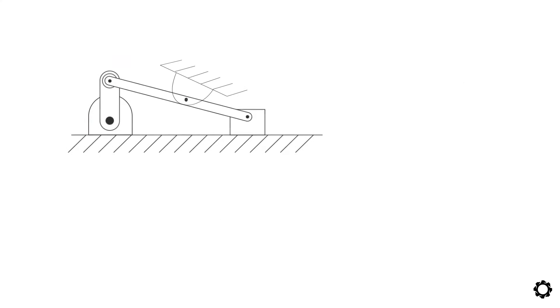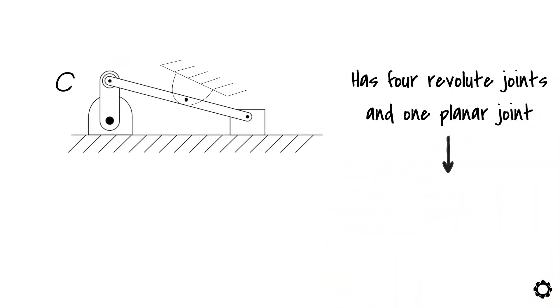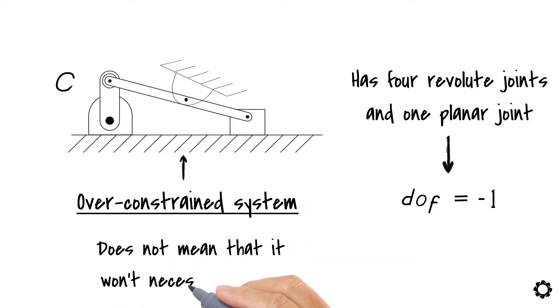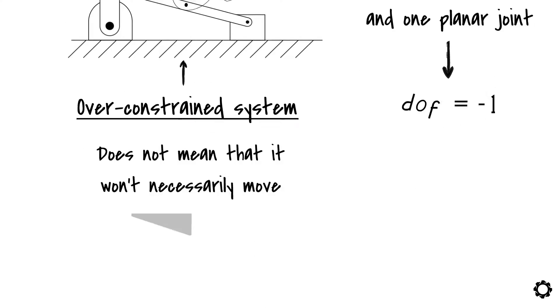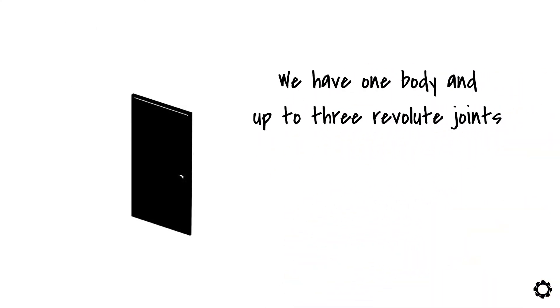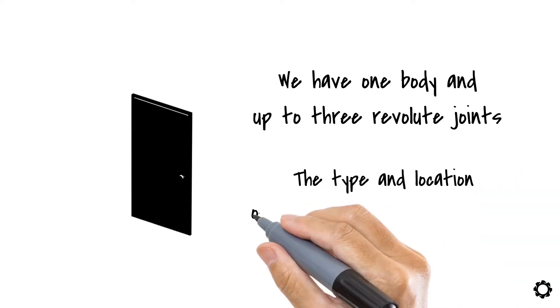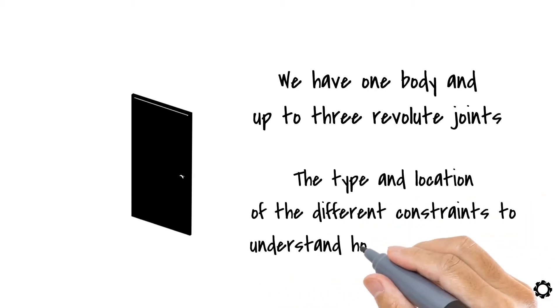The last system, system C, has four revolute joints and one planar joint resulting in a system with minus one degrees of freedom. This is the example of an over-constrained system. Notice that an over-constrained system does not mean that it won't necessarily move. Think of a normal door. We have one body and up to three revolute joints on it and it still moves. So it will be also important to know the type and location of the different constraints to understand how the body moves.